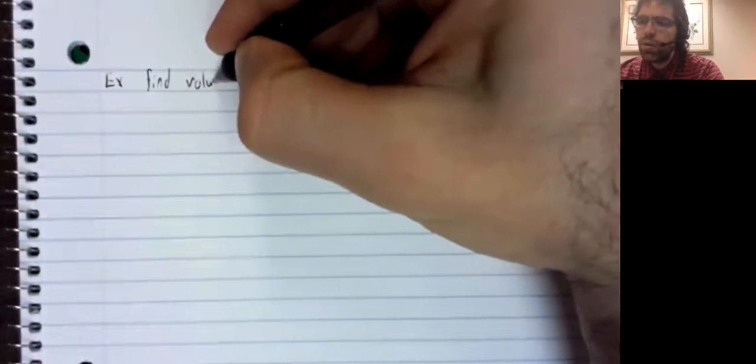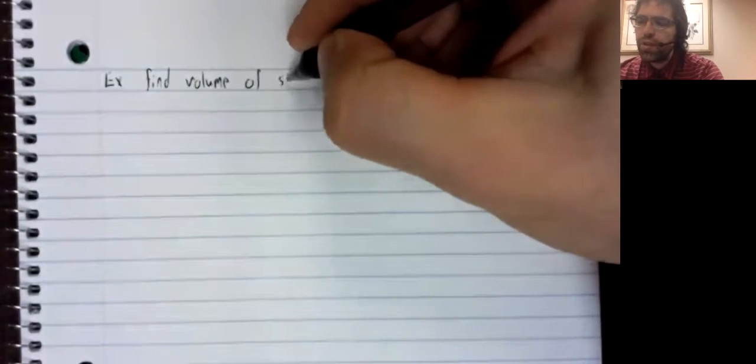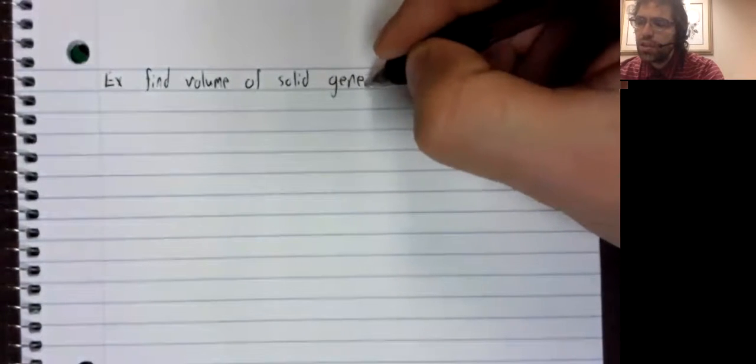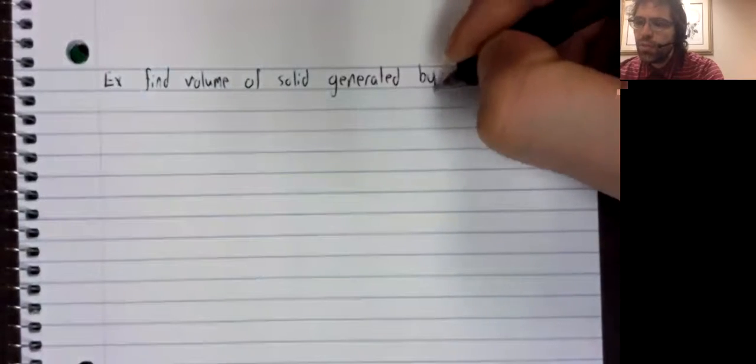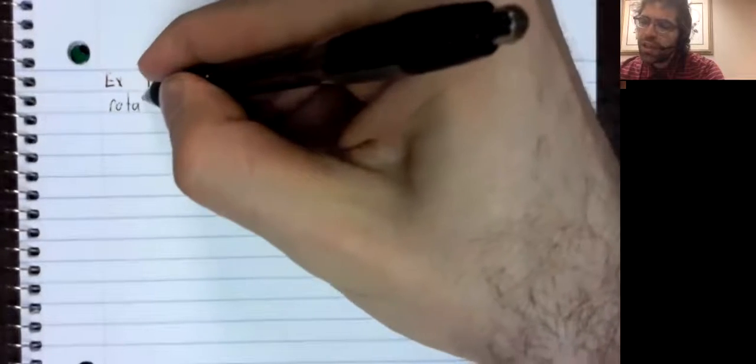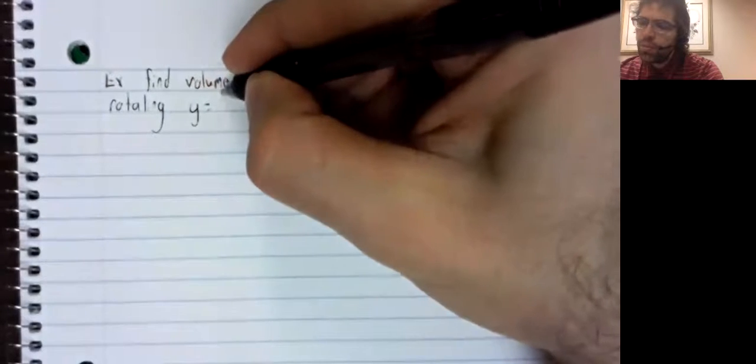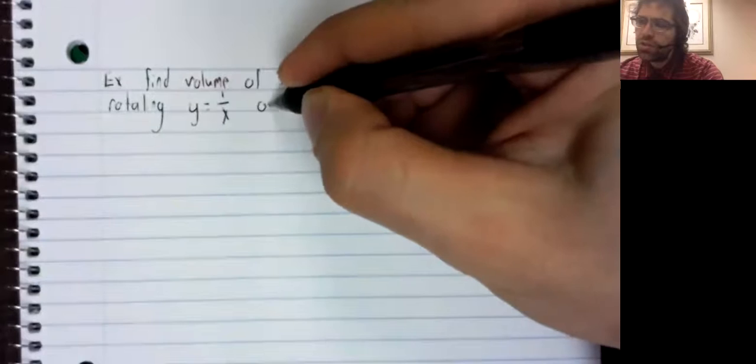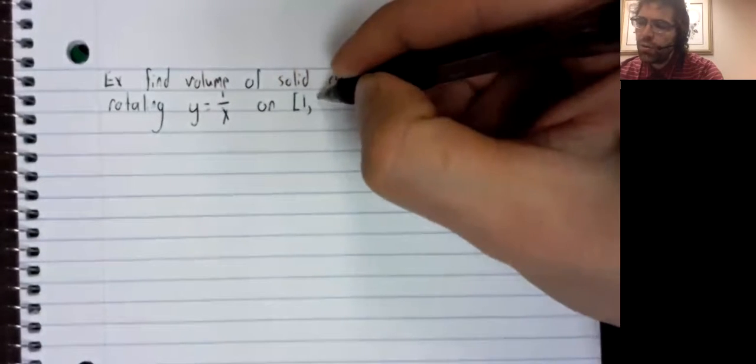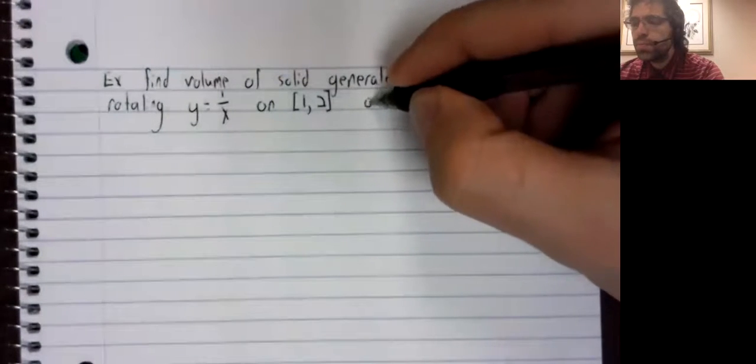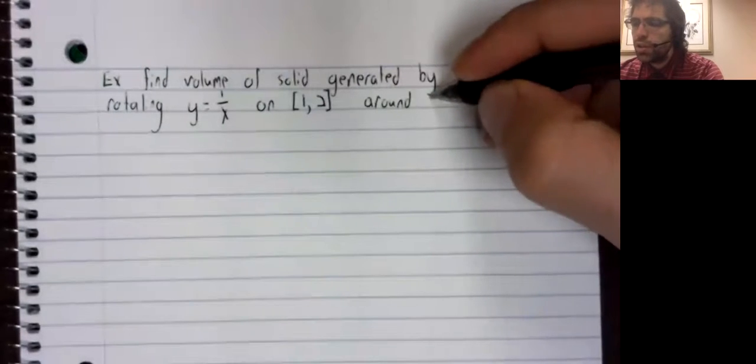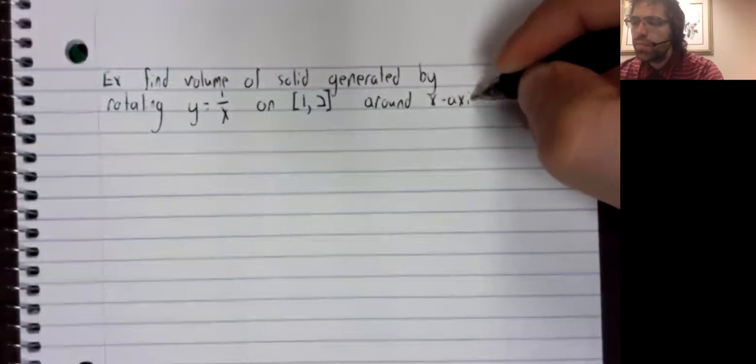Let's do an example where we find the volume of a solid of revolution. Example. Find the volume of the solid generated by rotating y equals 1 divided by x on the interval from 1 to 2 around the x axis.